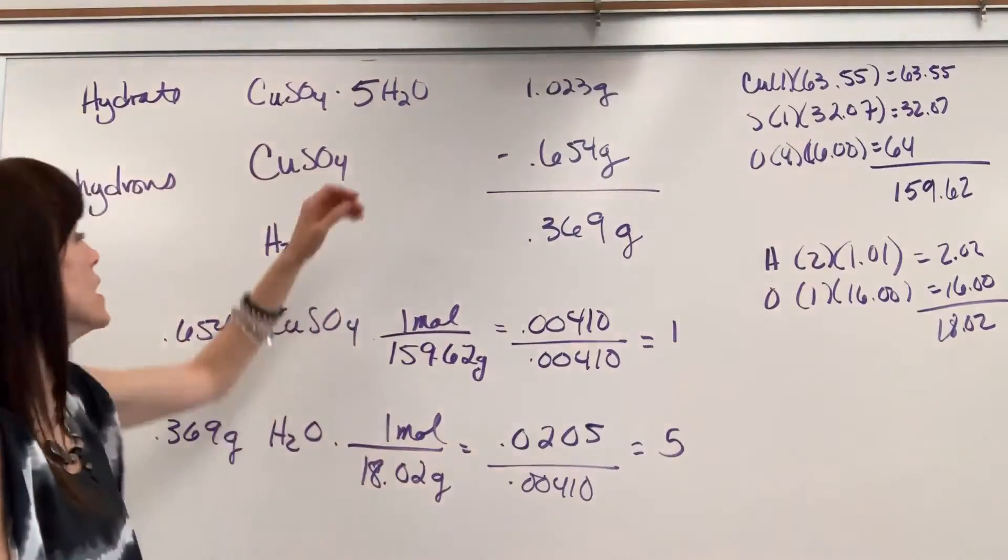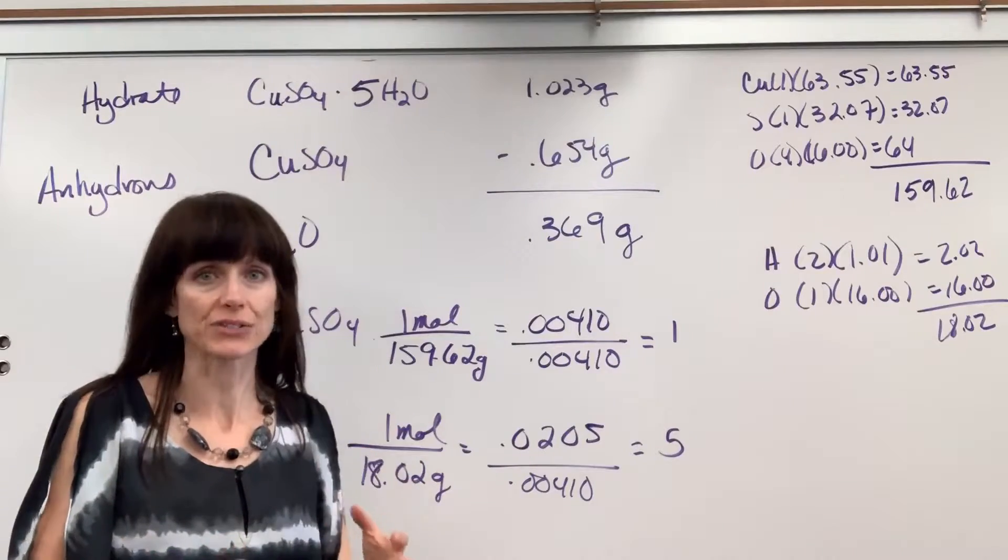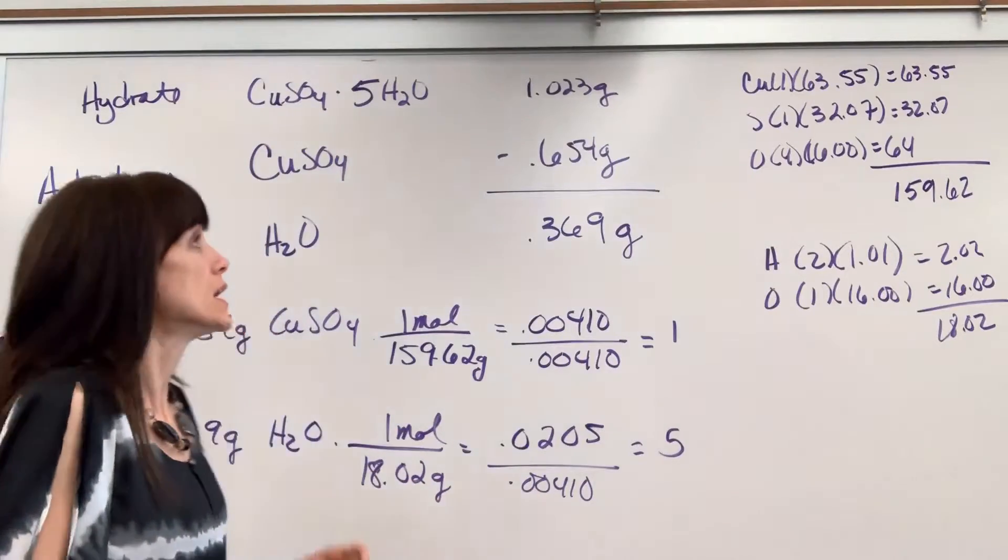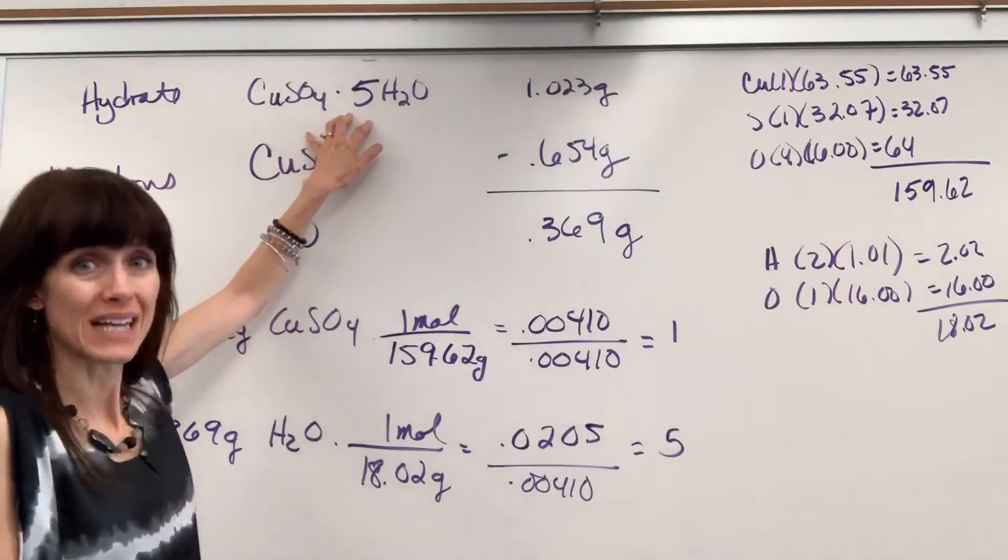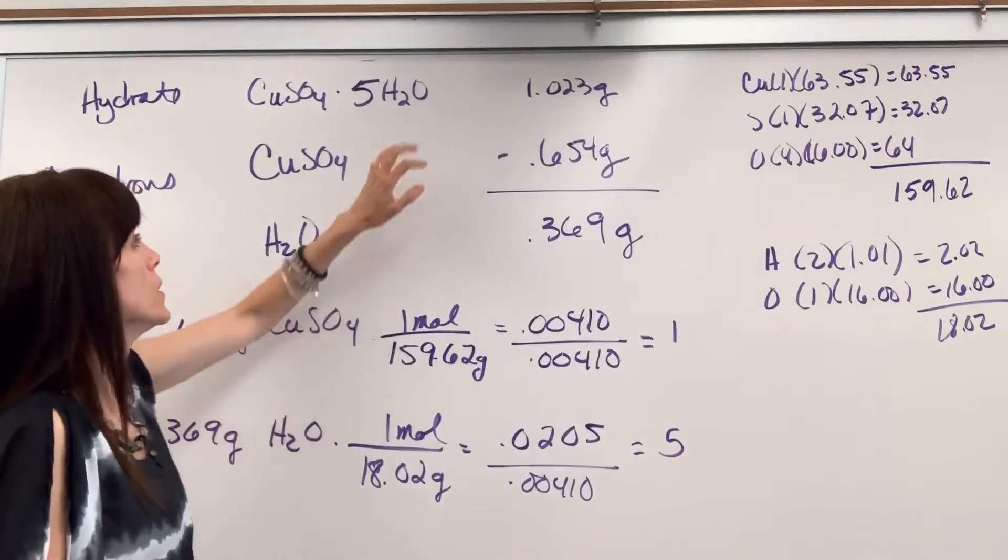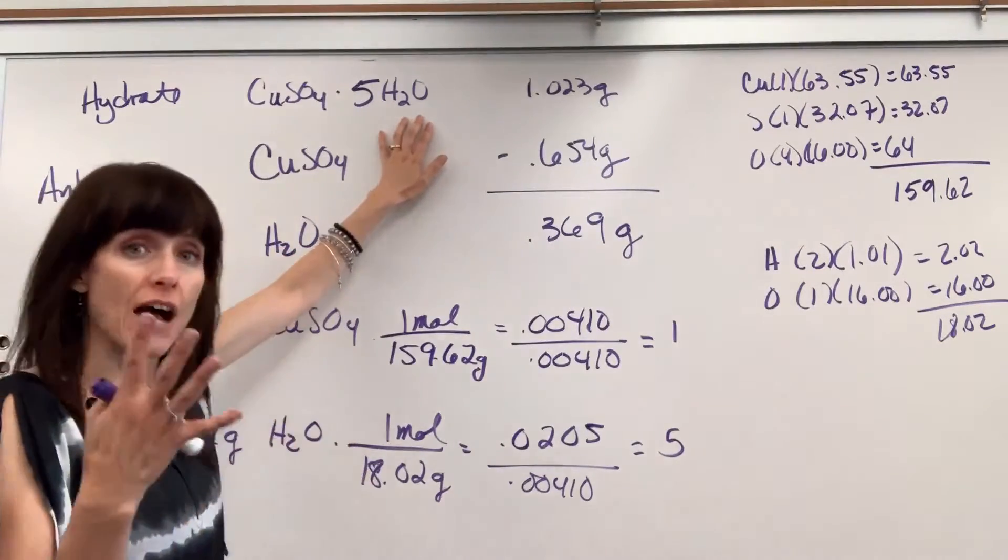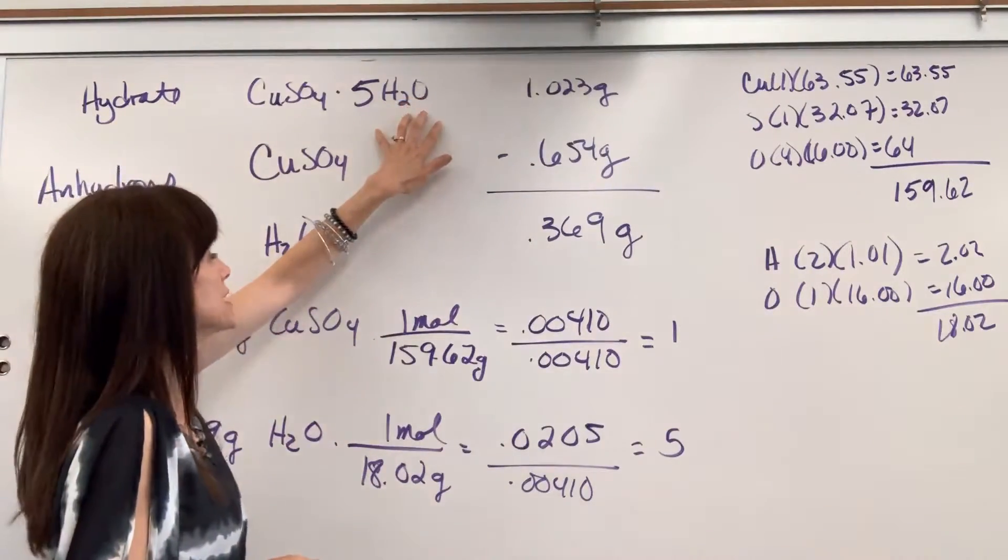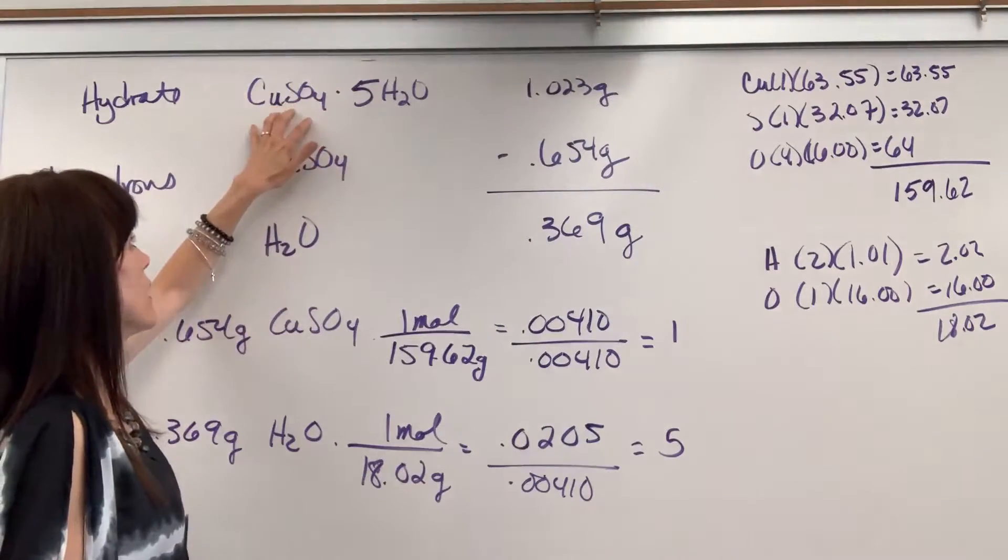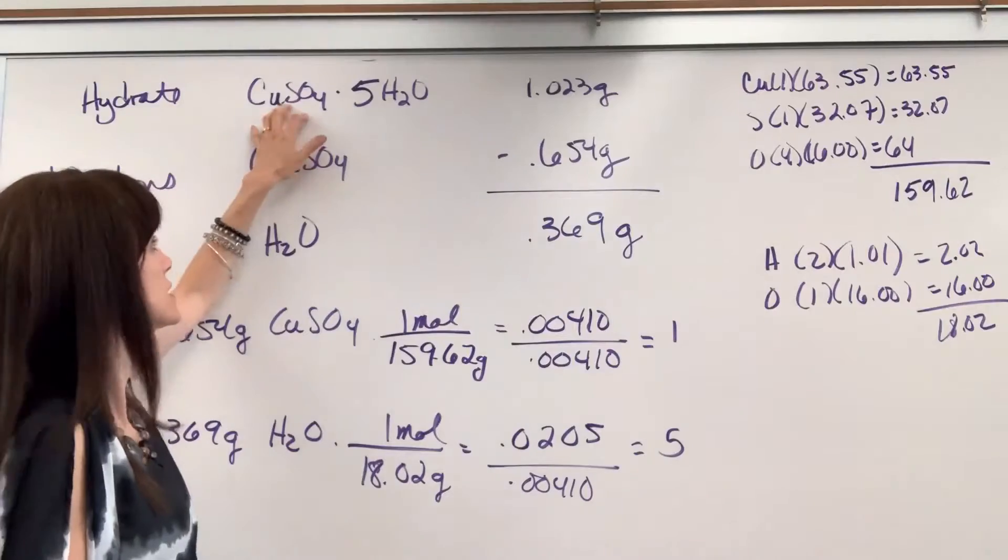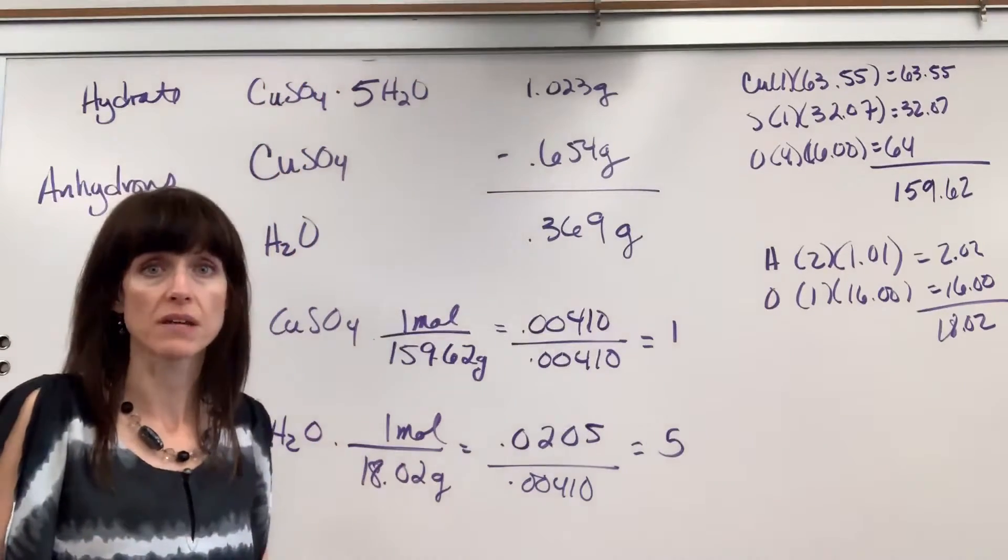Now talking about hydrates, that dot right there just indicates to you and I that it's a hydrate. It doesn't mean multiply. If you were to find the molar mass of that entire hydrate, this is the easiest way to do it. You take the molar mass of water, 18.02, you have five waters, so multiply 18.02 times five. Then you find the molar mass of copper sulfate and simply add those two together, and it will give you the molar mass of that hydrate.